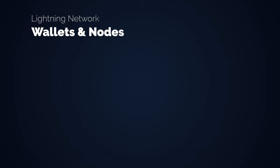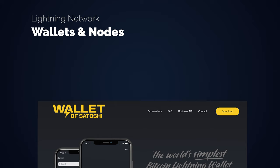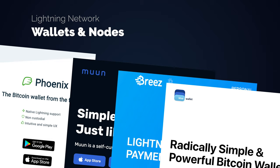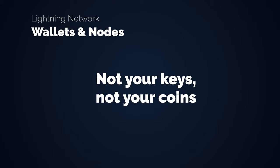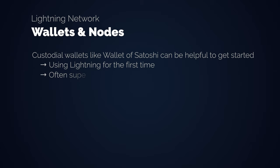Before talking about different Lightning applications, I want to briefly cover different node implementations and wallets. The easiest custodial solution is probably Wallet of Satoshi, available for iOS and Android, though it's a centralized service that stores your Bitcoin. I prefer non-custodial wallets. Popular ones include Phoenix, Moon, Breeze, Blue Wallet and many more. Not your keys, not your coins applies to Lightning just as much as it does to Bitcoin. For small payments where you don't necessarily need full privacy and censorship resistance, custodial wallets can be a good starting point to learn about Lightning transactions and invoices.